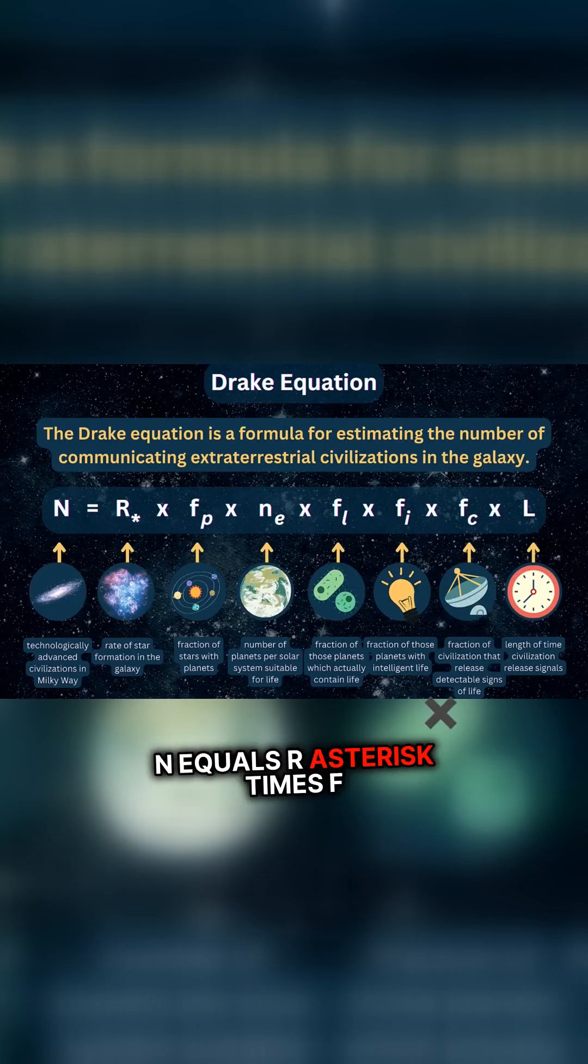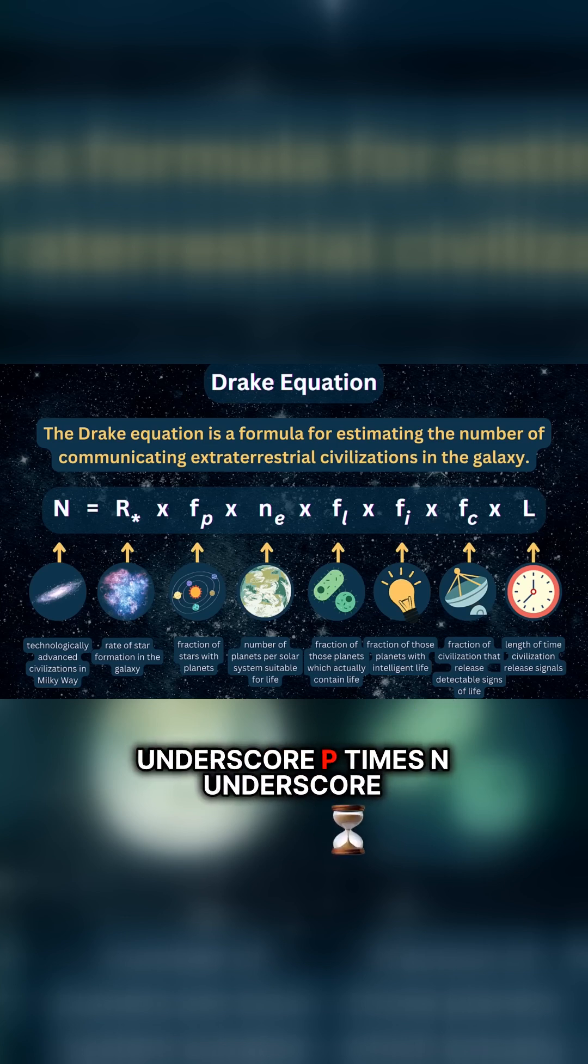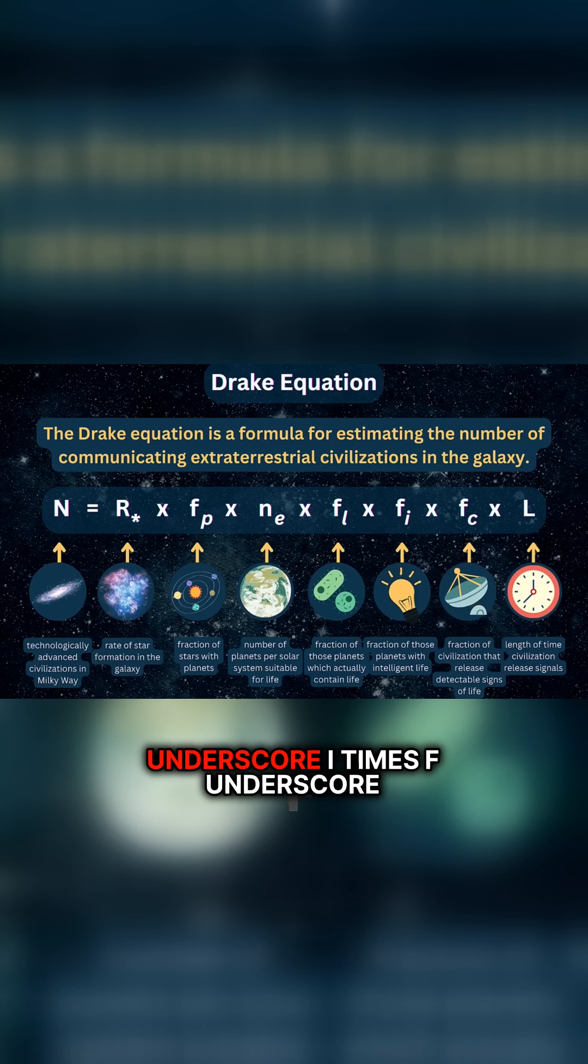N equals R asterisk times f underscore p times n underscore e times f underscore l times f underscore i times f underscore c times L.